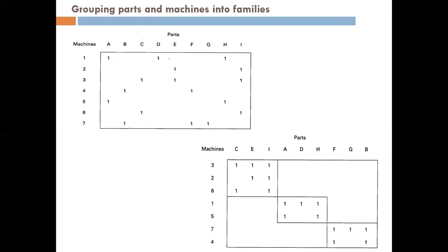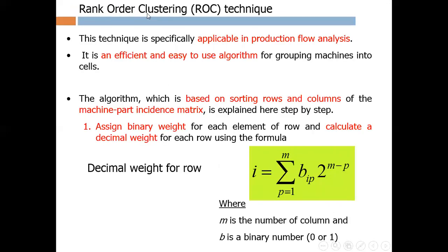Questions arise: where will the part move, how to arrange the machines, how to arrange the different parts? What we can do is apply quantitative analysis to make part families and arrange them so that the same combination of operations can be performed efficiently. For example, parts C, E, and I interact with machines 3, 2, and 6, so we can keep them in a single cell. Similarly, parts A, D, and H can be kept with machines 1 and 5. This is the role of the rank order clustering technique.